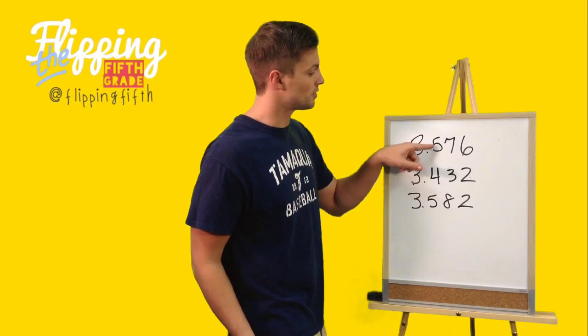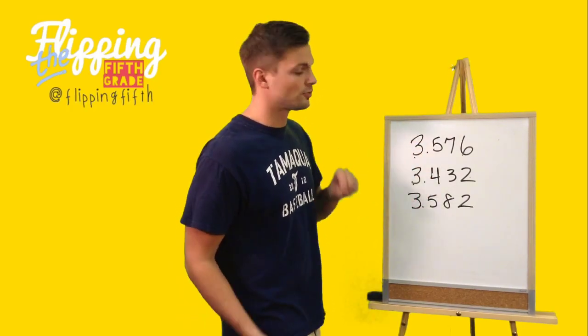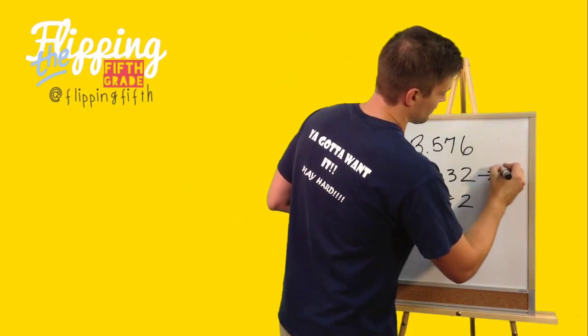When we go to the next digit, the fives - the five here, four here, five here - we're going to see that the four is the least. So that one will go first.